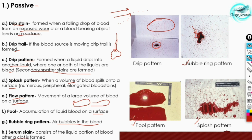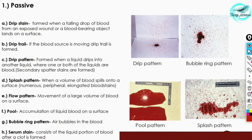The last passive subtype is the serum stain, which consists of the liquid portion of blood after a clot is formed. Sometimes blood is partially clotted while another portion appears like plasma or serum — transparent. That particular stain is called a serum stain. That covers all the subdivisions of passive blood stain patterns.